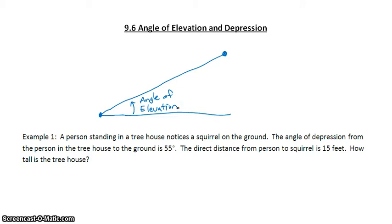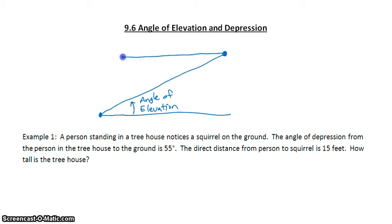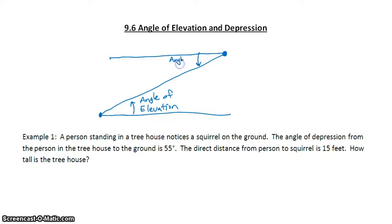The angle of depression is when you're at the top of an object and you look straight out and then look down. That angle of depression is created between the horizon and the line of sight looking down.